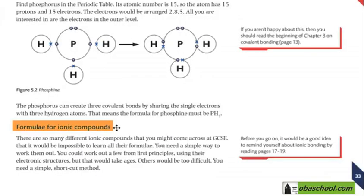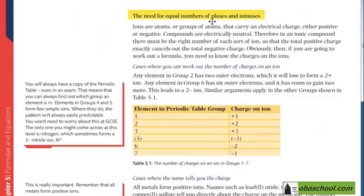Formula for ionic compounds, page 33 in your book. We will learn how to write a formula for ionic compounds. The need for equal numbers of pluses and minuses is a main characteristic in ionic compounds because they are neutral.